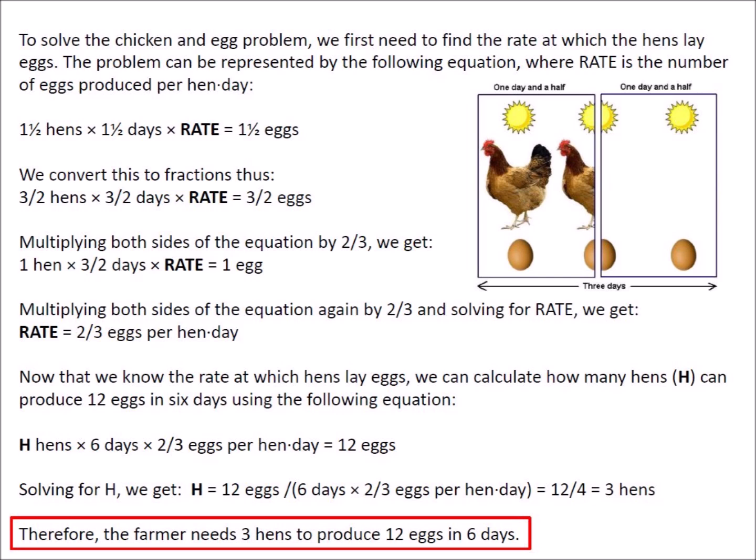So in three days, a hen and a half will produce three eggs, and in six days, a hen and a half will produce six eggs. All we need to do now is double the number of hens, so a hen and a half times two equals three hens, which will produce twelve eggs in six days.